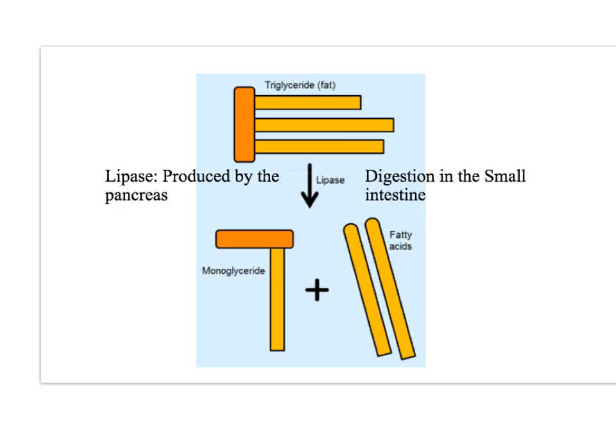An overview of lipid digestion: most of the lipids that we eat are triglycerides, and they can be broken down into monoglycerides and fatty acids. That's hydrolysis of the ester bond that occurs between the glycerol and the fatty acids. Lipase hydrolyzes the ester bonds; lipase is produced by the pancreas and secreted into the small intestine, so the digestion of lipids occurs in the small intestine. In the lumen of the small intestine, you'll find monoglycerides and fatty acids.